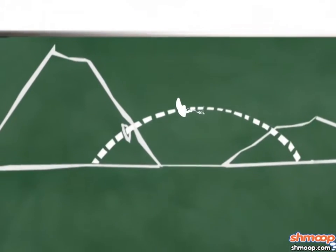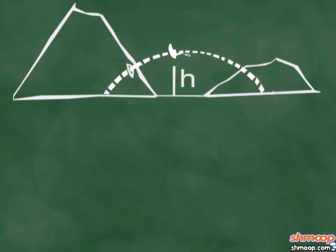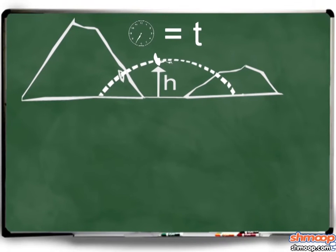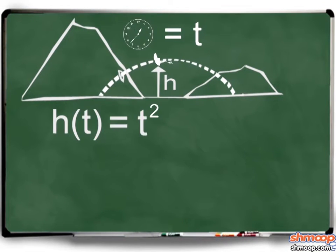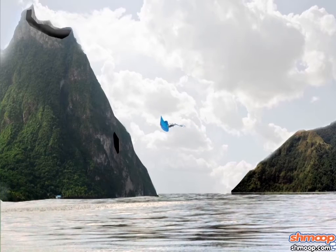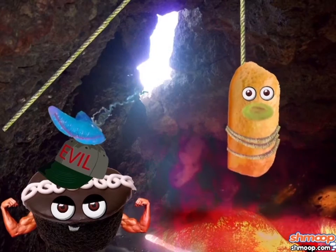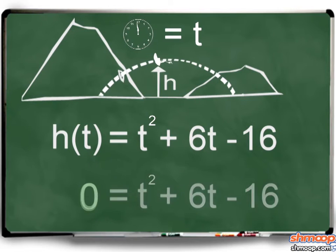When shot from a missile launcher, the equation for a jellyfish's height h in feet at time t in seconds is h(t) equals t squared plus 6t minus 16. When does the object strike the ground? Hint, it's when its height is zero.